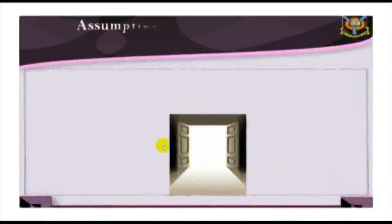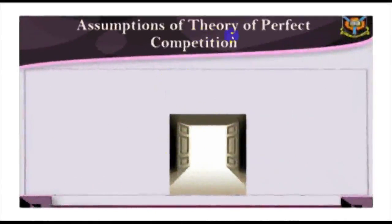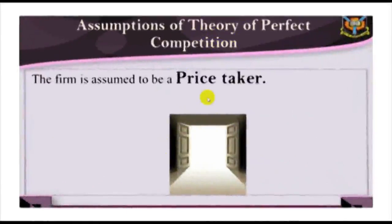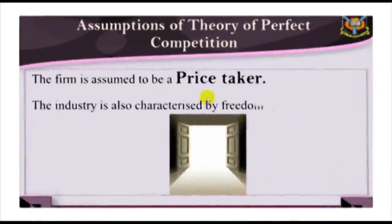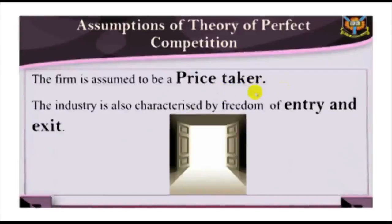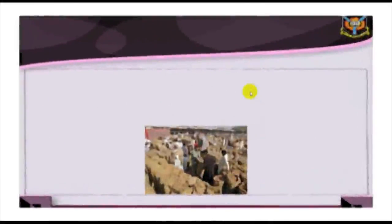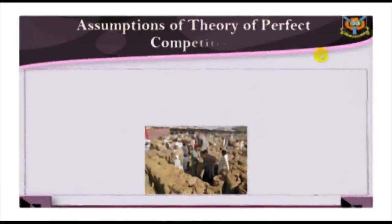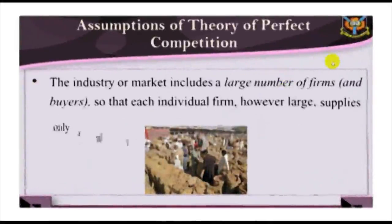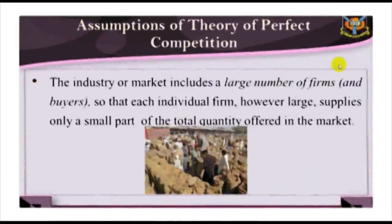Three, point out the conditions for short-run and long-run equilibrium of the market. Assumptions of the Theory of Perfect Competition. The theory of perfect competition is built on a number of assumptions. Number one: the firm is assumed to be a price taker. This means that no individual firm is so big as to influence the market price, and the firm must accept as given whatever price is ruling in the market.